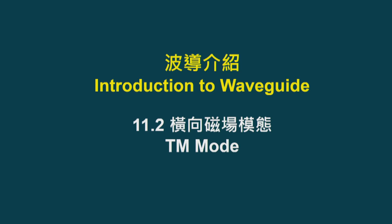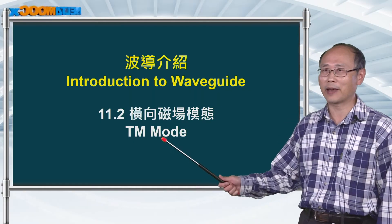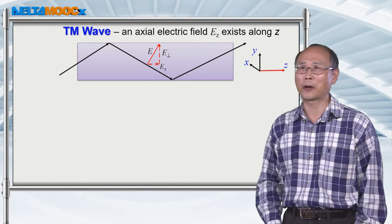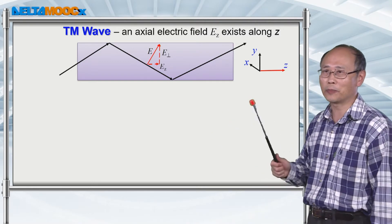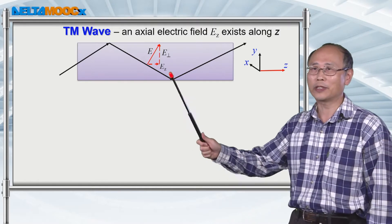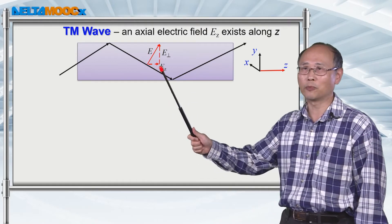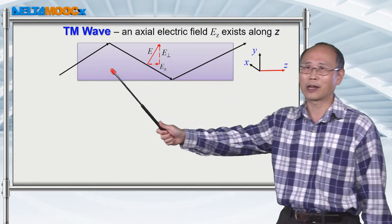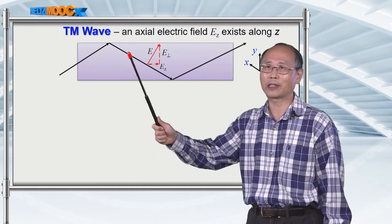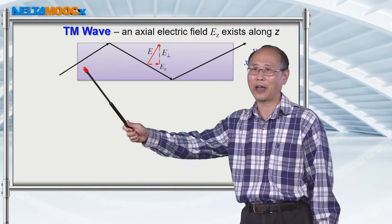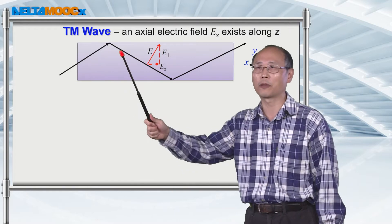In this session 11.2, I want to focus our attention on TM mode. For a TM mode wave, you have the field component along the propagation direction defined to be the z-direction in this coordinate system. The reason that you can derive a small component of the electric field along the z-direction is that you can view this guiding structure with the TM wave propagating off-axis, having an angle with respect to the boundary.